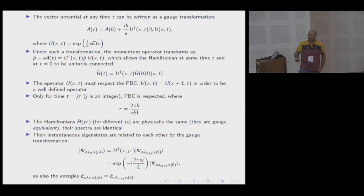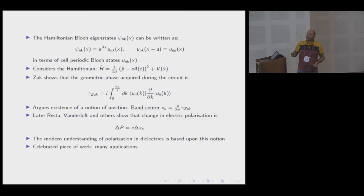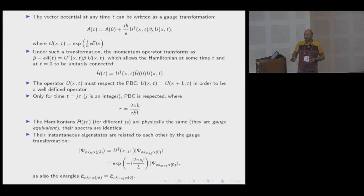Because of the gauge nature of the vector potential, one finds that Hamiltonian at different times can be related by a unitary transformation, like a gauge transformation. However, because we have periodic boundary condition, these operators U must also respect the periodic boundary condition. A quick calculation shows, because there is an x involved here, that only for certain integer times j tau, this condition is respected.